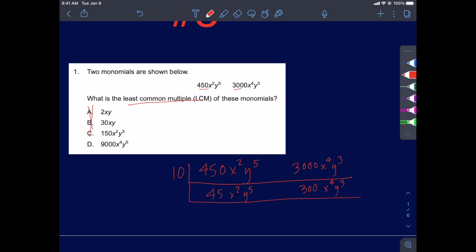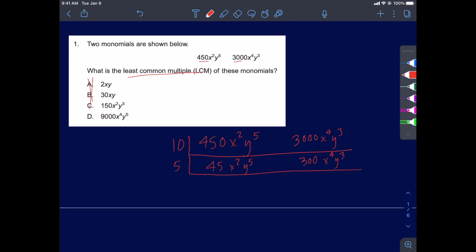Clearly there's more that goes into just the coefficients. 5 would go in here. And so I'm now at 9x squared y to the 5th. And 5 would go in here 60 times.